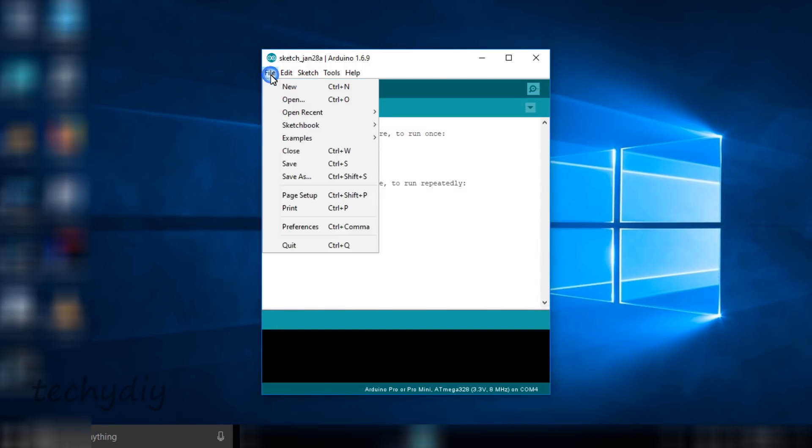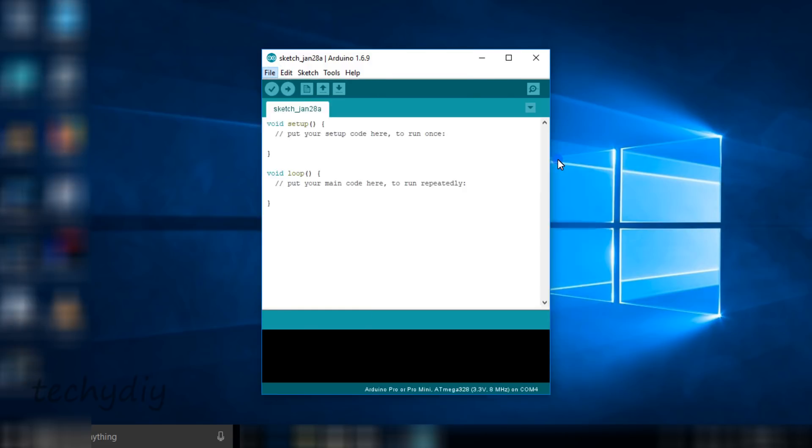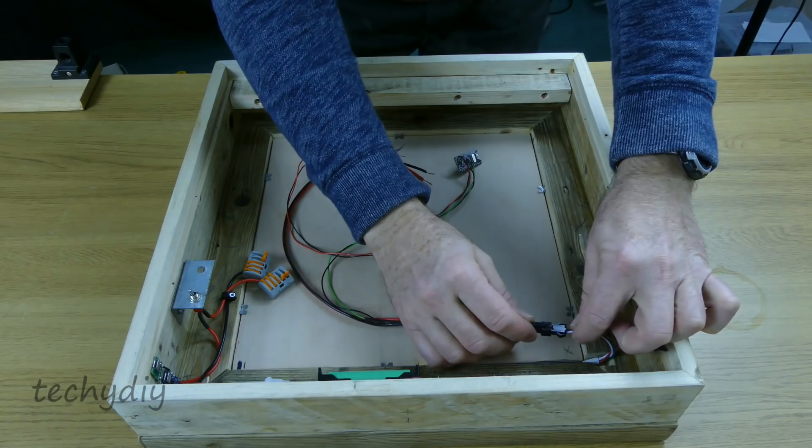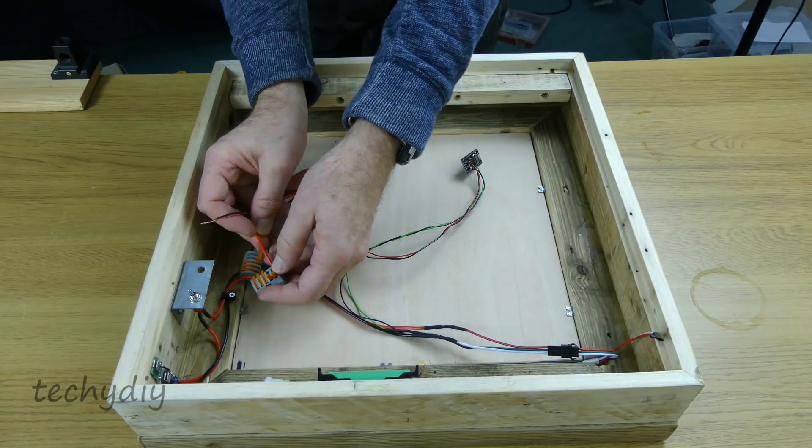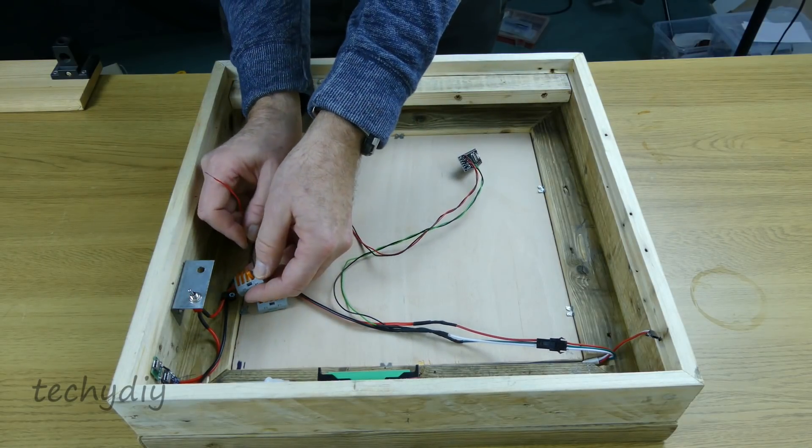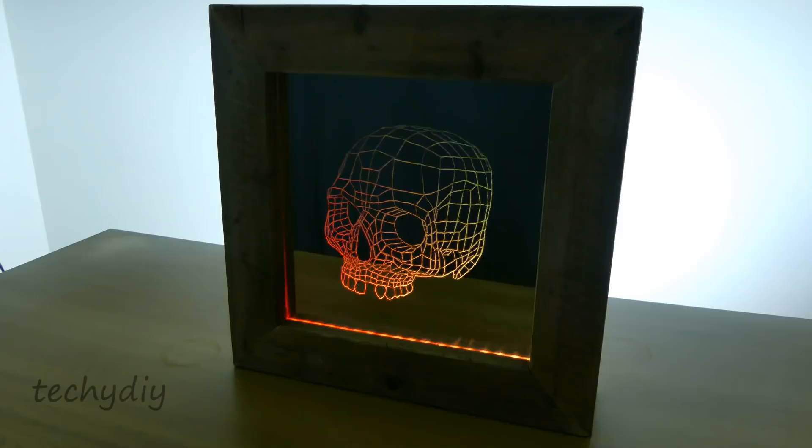So that's the fast LED library installed. It includes quite a few examples so let's try one called color palette. First of all we need to change the LED pin to 4. The number of LEDs to 18. The LED type to WS2812B. And the color order is correct for the LED strip that I'm using. So let's compile and upload that. Next the Pro Mini was plugged into the LED connector. The two sets of power wires were connected to the WAGO connectors. And the Pro Mini was temporarily secured to the case with a velcro pad.